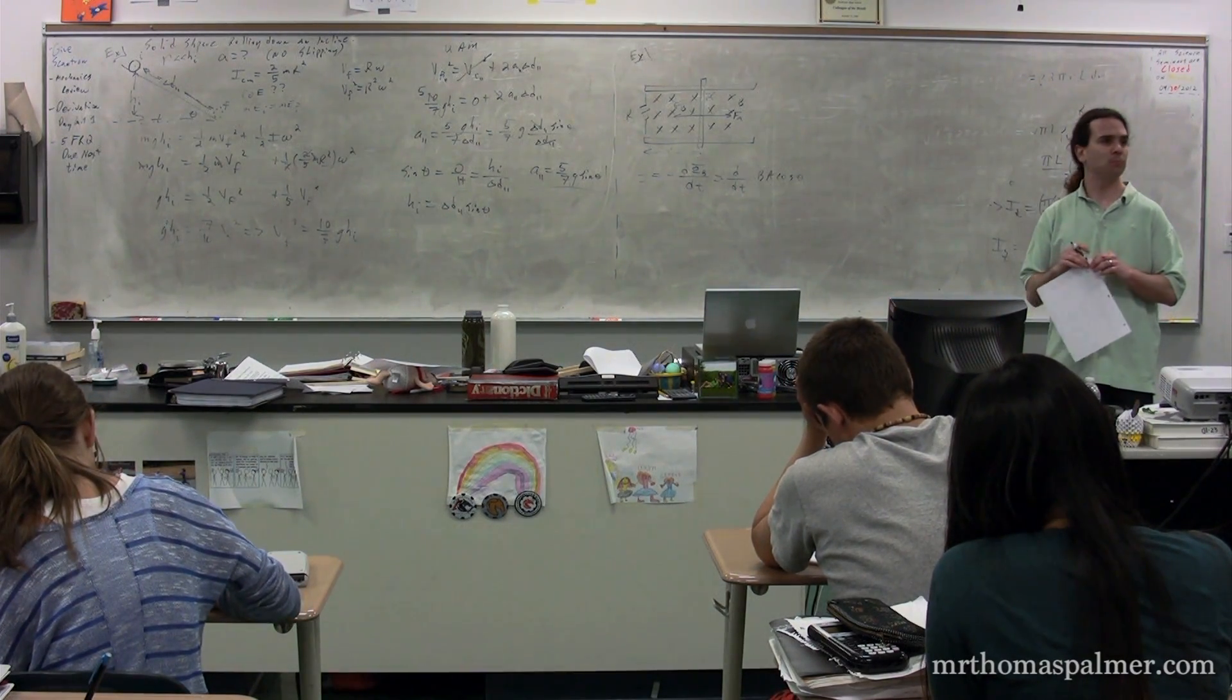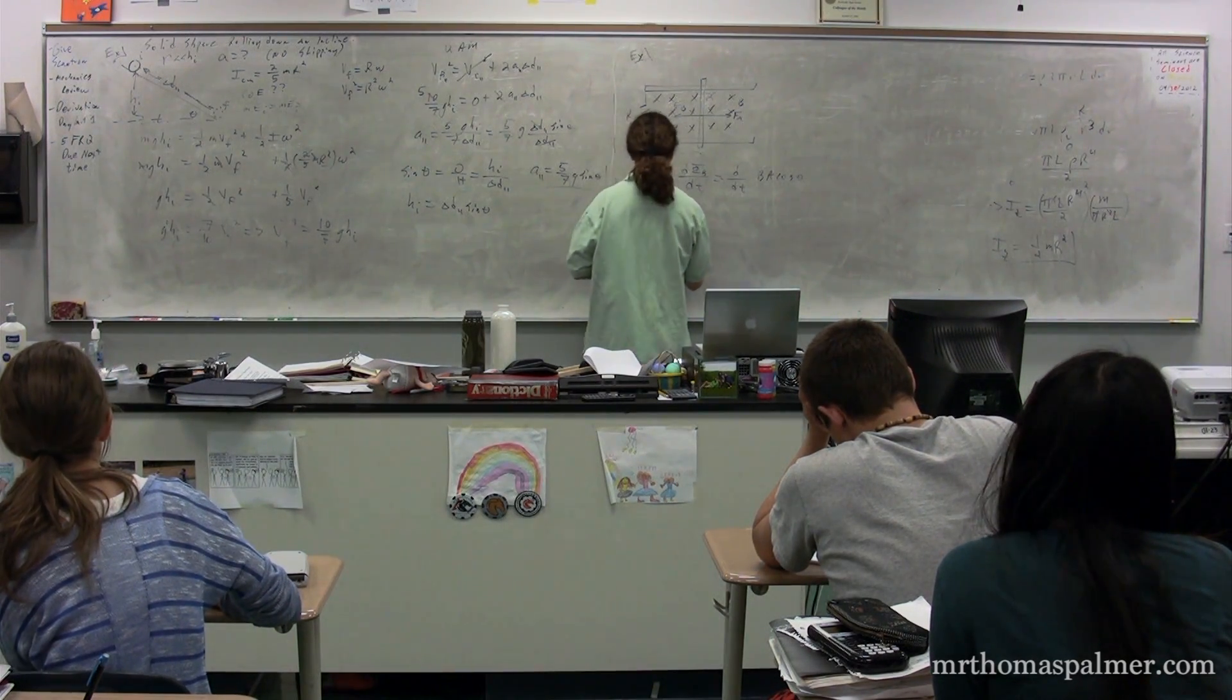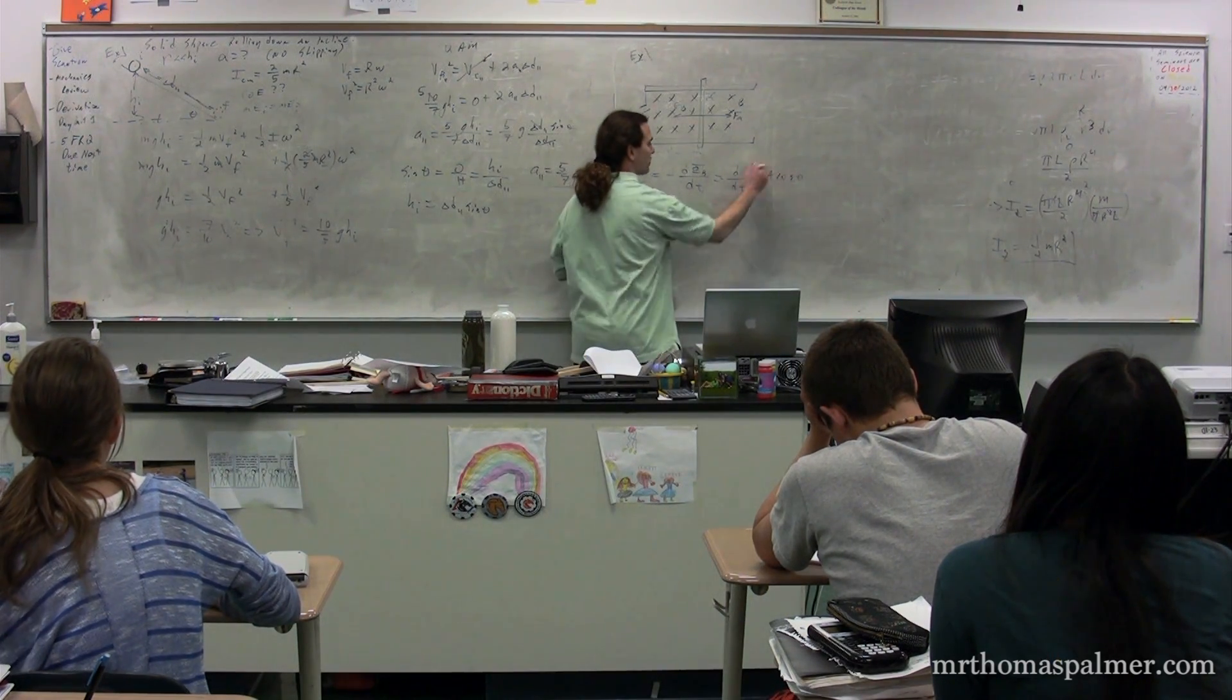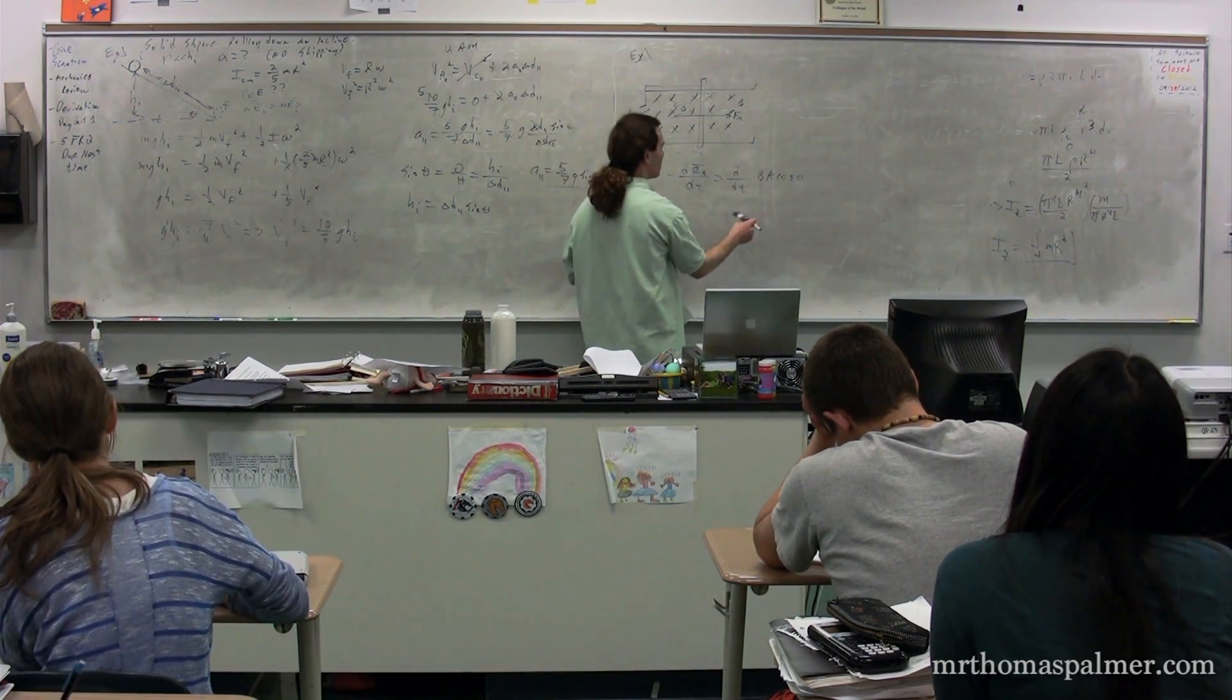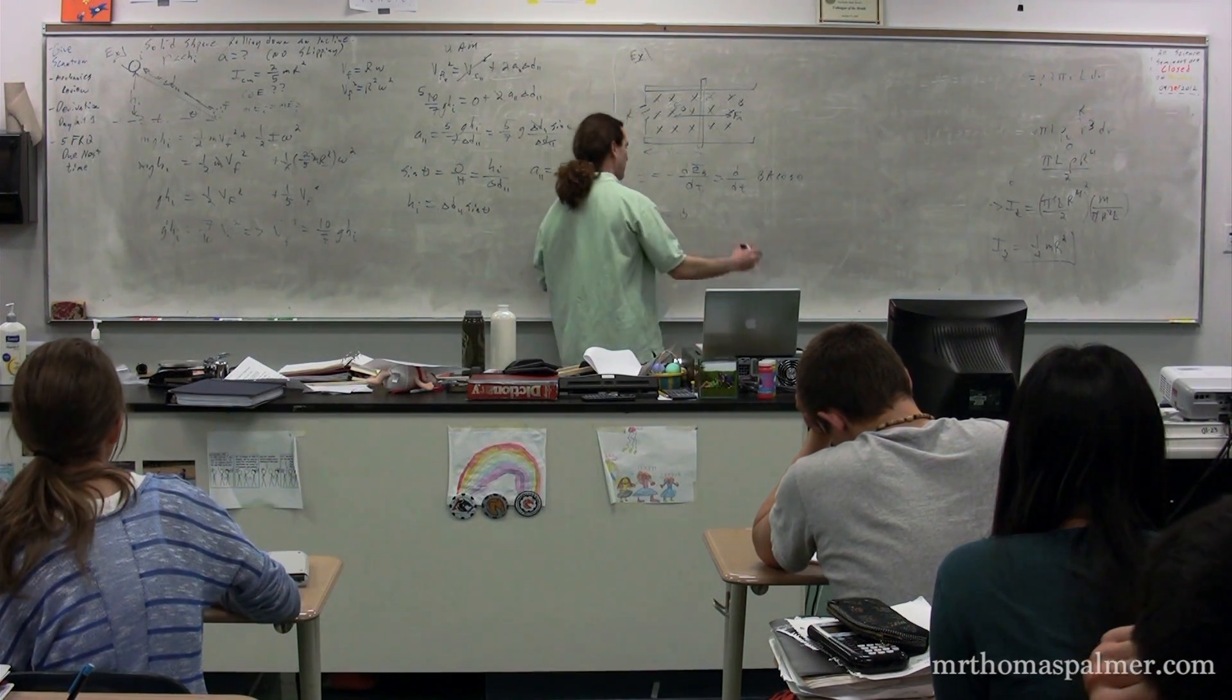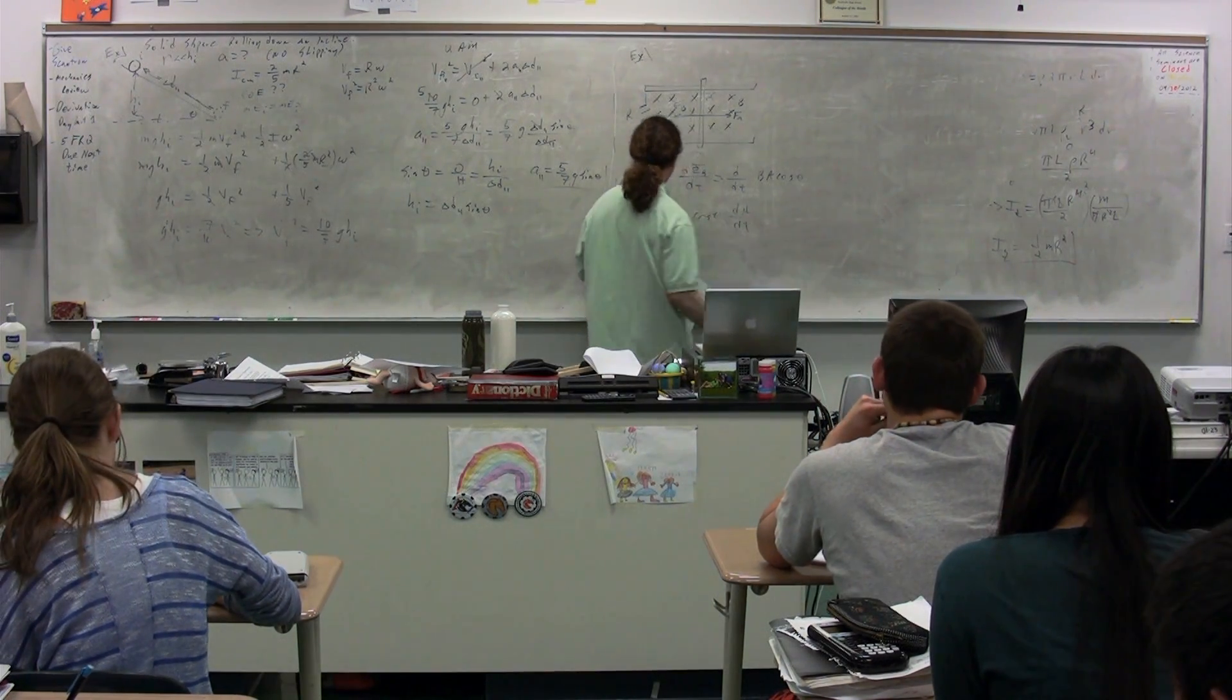The magnetic field is not a function of time. We're taking the derivative. B is constant. Does the area change? Yes. What about theta? No. So we have negative B cosine theta times the derivative of the area as a function of time.